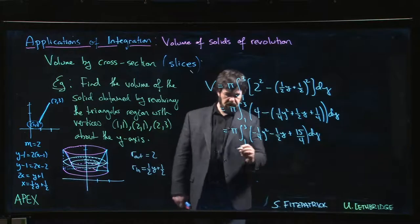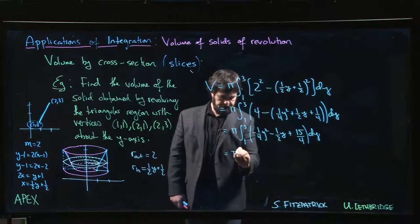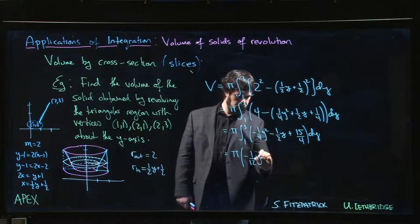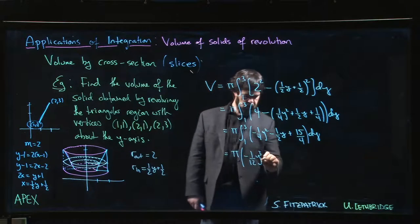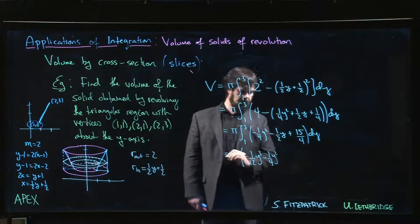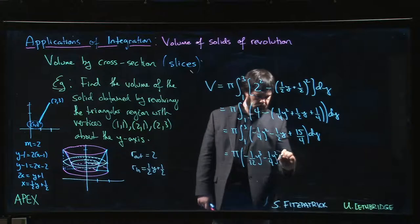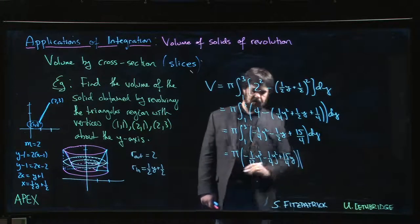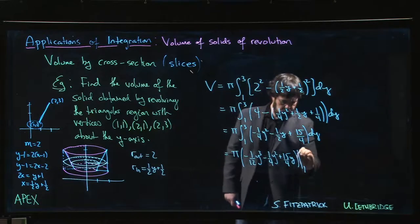Now we can do the antiderivative. So we have pi times minus 1/12 y cubed minus 1/4 y squared plus 15/4 y, and we're going to evaluate from 1 to 3.